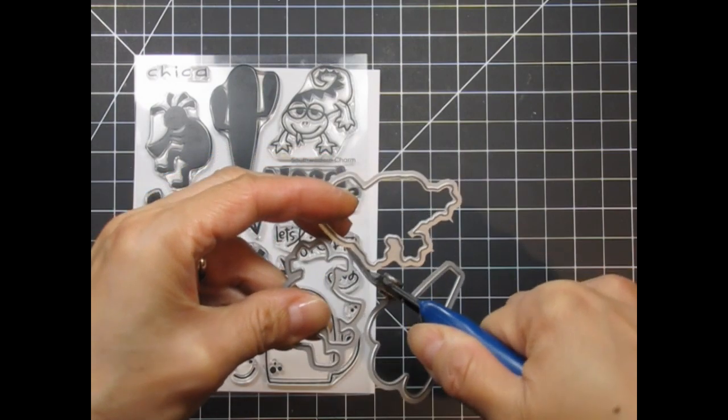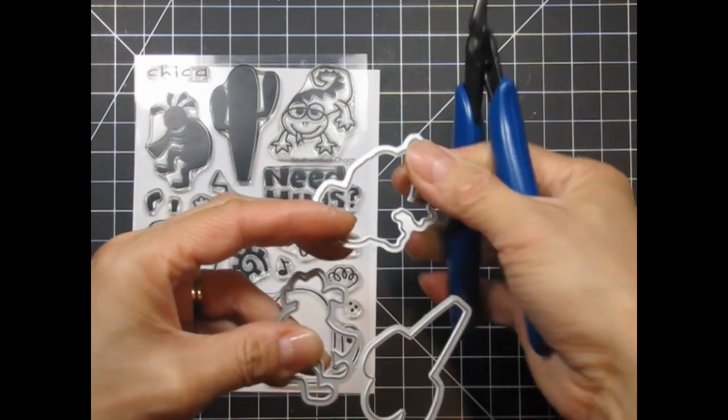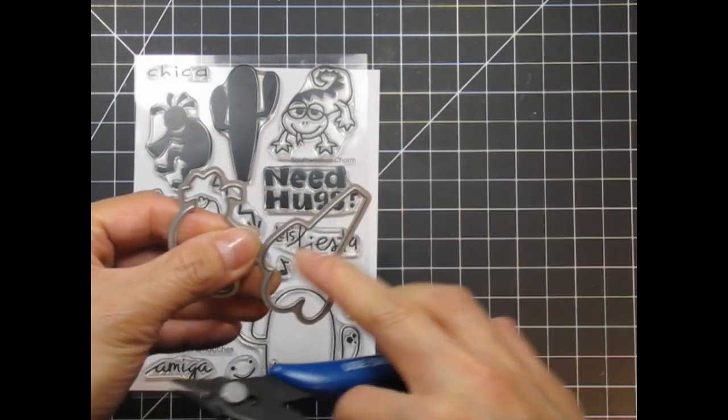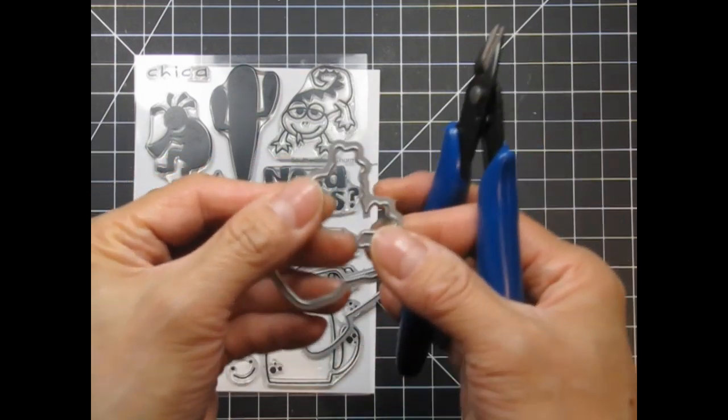The three dies that come with the Southwest Icons set are for the Solid Cactus, Cocopelli, and Lizard. First I need to separate them with wire snips.